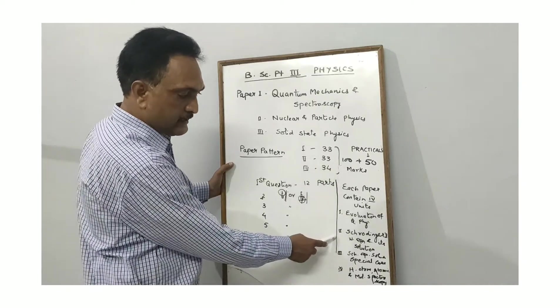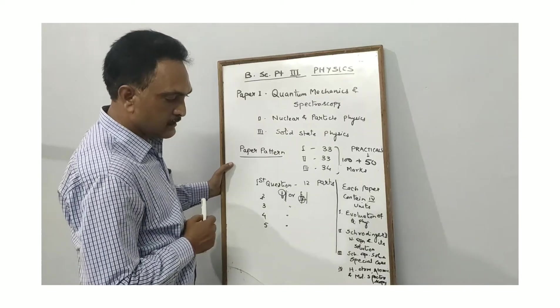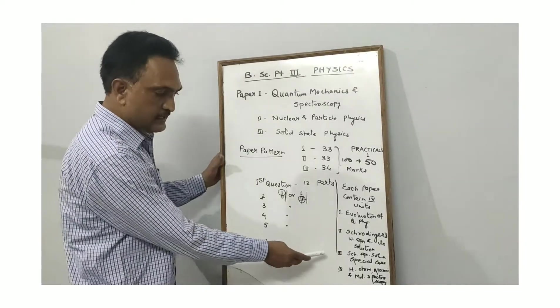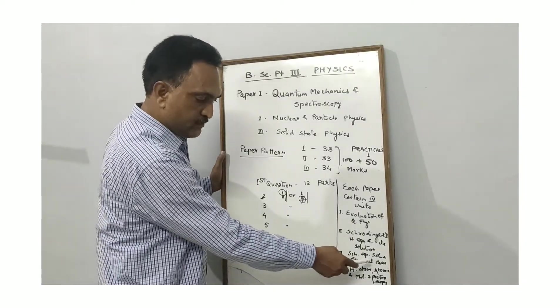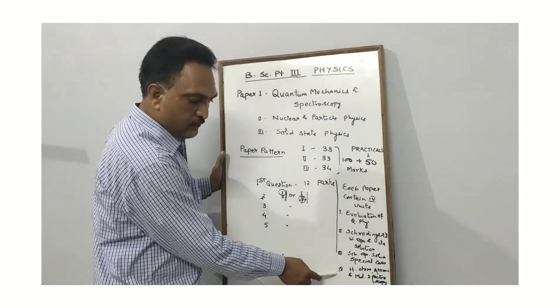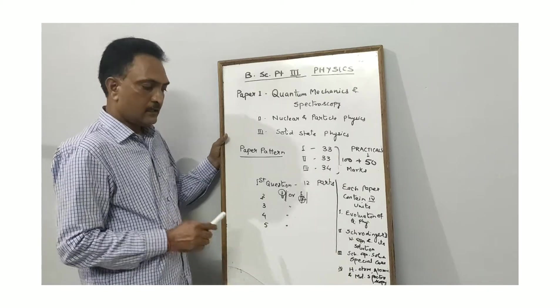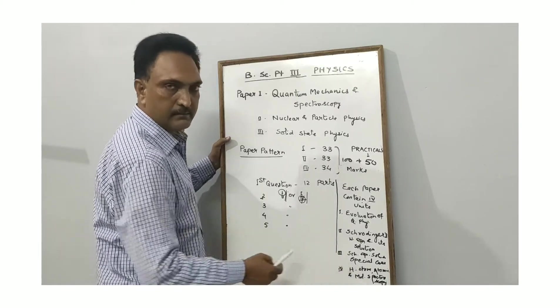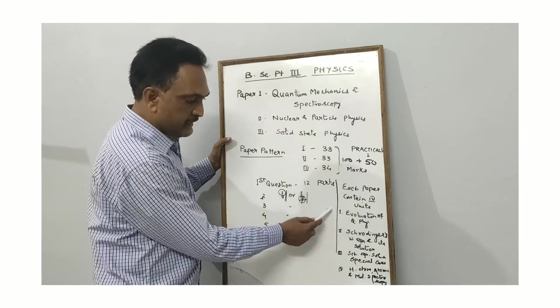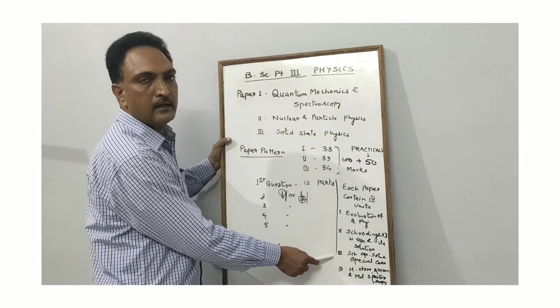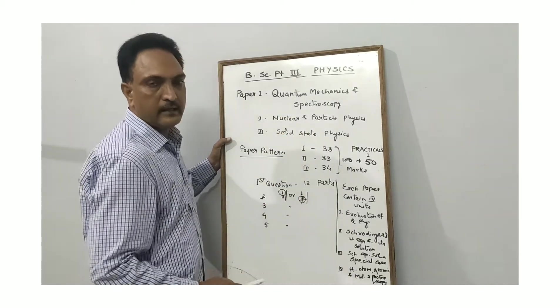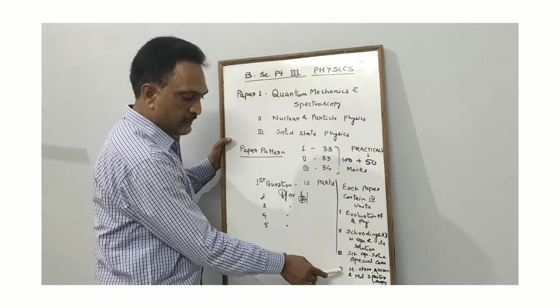The first unit is quantum physics. The second unit is Schrodinger's wave equation and its solution. The third is Schrodinger's wave equation for special cases, and the fourth unit is hydrogen atom and spectroscopy. So the first three units are quantum mechanics and the fourth unit is spectroscopy.